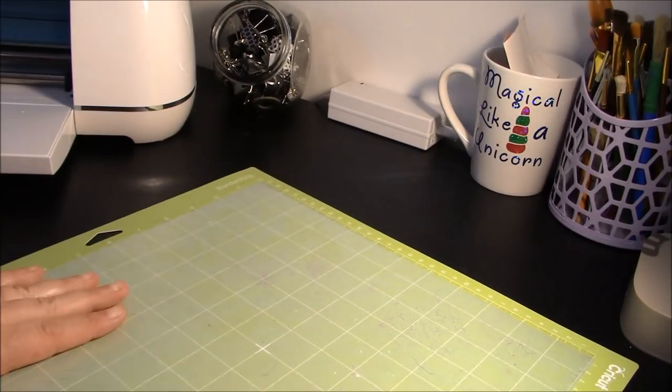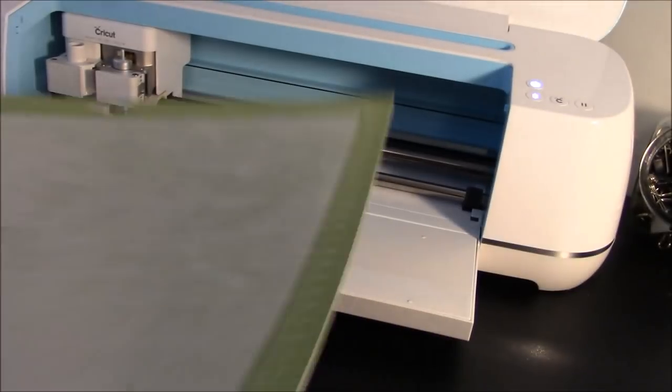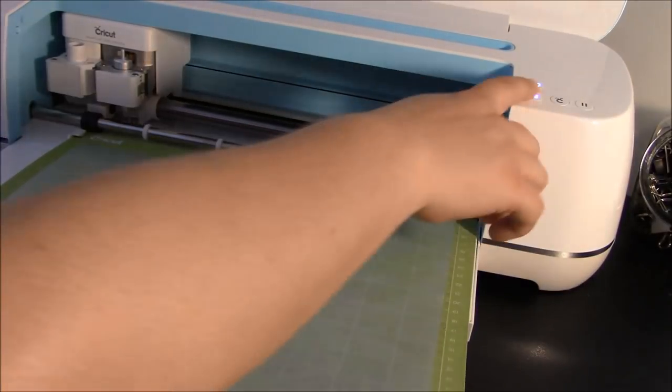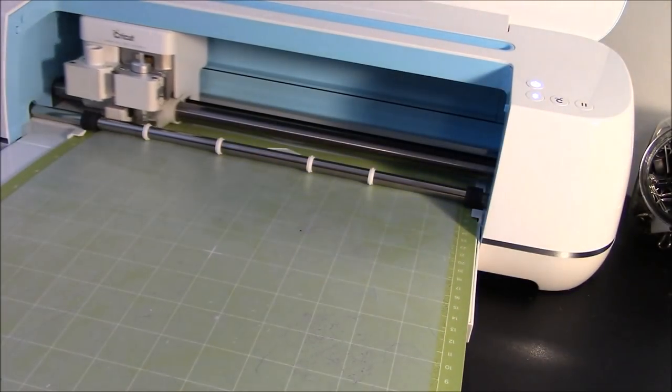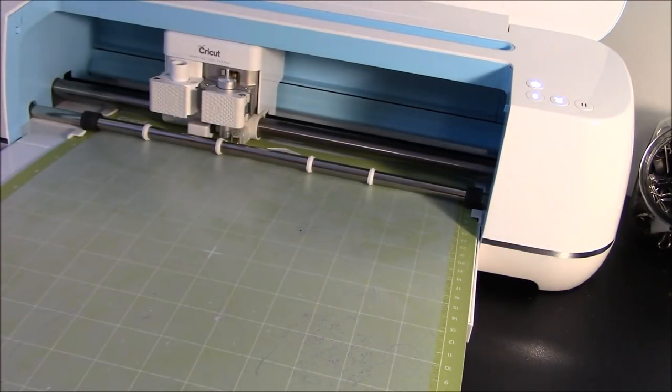So you're going to go ahead and put it on your mat. And take you over to the machine. And we're going to cut it, like I said, just on the regular iron on settings. So you don't have to do anything special as far as your settings with this. It cuts just like regular iron on. So we'll go ahead and click the go button, the little Cricut icon.